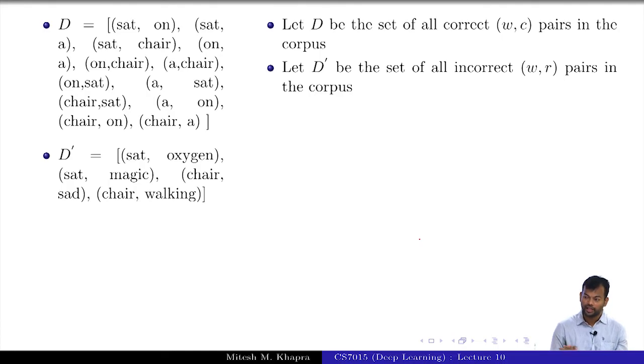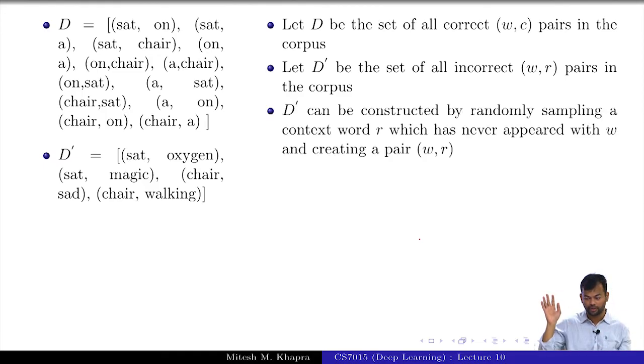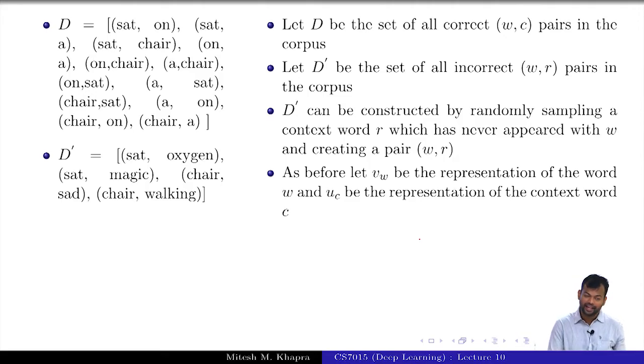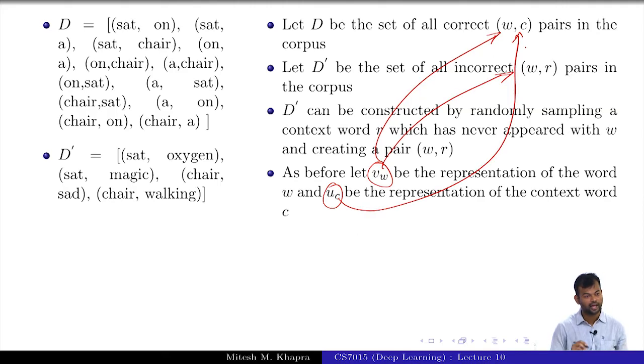Now let D' be the set of all incorrect (w,r) pairs in the corpus, and r here stands for random. How am I going to construct this corpus? I take a word, I know all the words which appeared with it, and I know all these other words which have not appeared with it. I will randomly sample a word from there and put it as r. I can compute D' - again D was always for free, now D' is also obviously for free. I have (w,c) and (w,r), and I have these corpora D and D'. And as before, let v_w be the representation of the word and u_c be the representation of the context word. v_w will tie to these two, and u_c will tie to this, and u_r is something else that we will use for this.